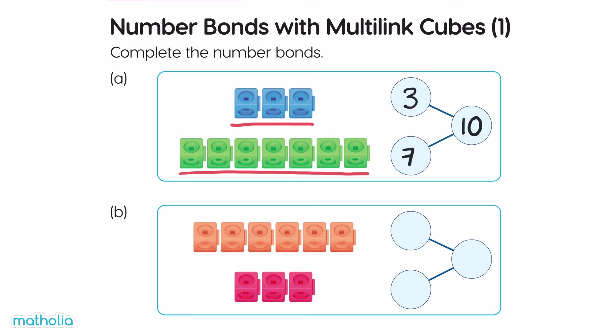Part B. How many orange cubes are there? There are six orange cubes. Six. How many pink cubes are there? There are three pink cubes. Three. How many cubes in all? Six and three make nine.